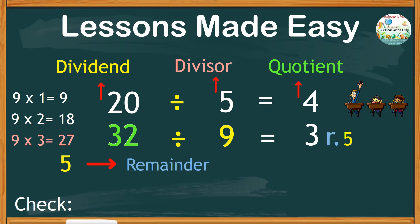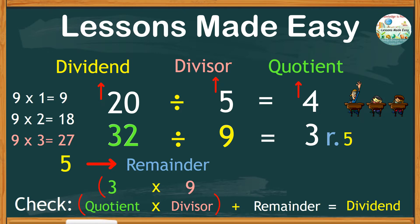But how do we check if our answer is correct when there is a remainder? So just the same, take the quotient, multiply by the divisor, plus the remainder, and all this must be equal to the dividend. So in this case, the quotient is 3 times the divisor 9, that makes 27, plus the remainder 5, all together is equal to 32, which means that our answer is correct.